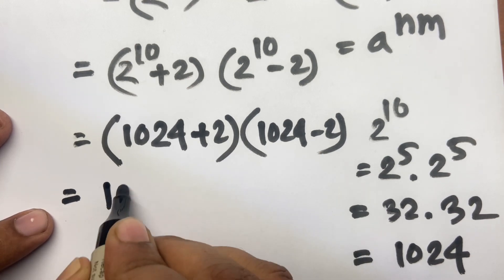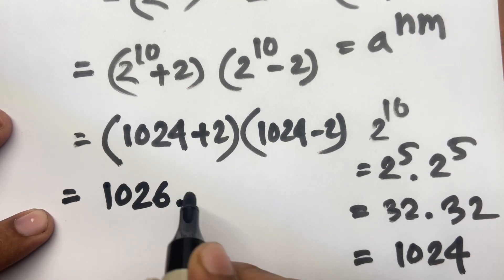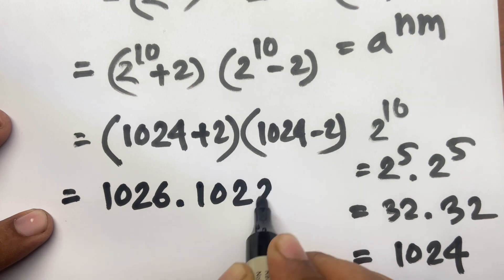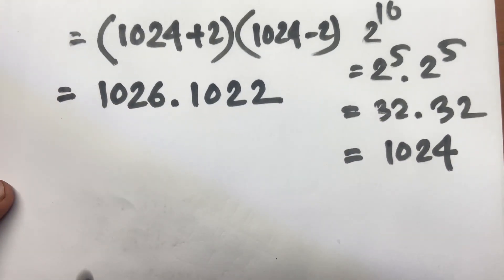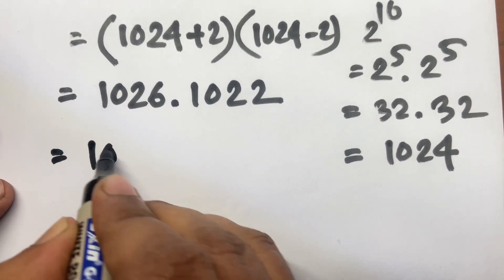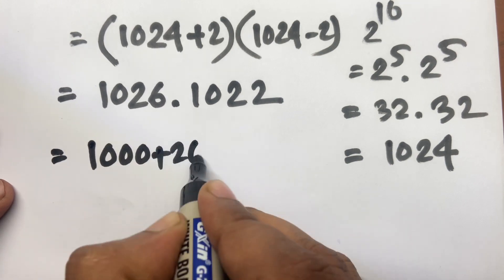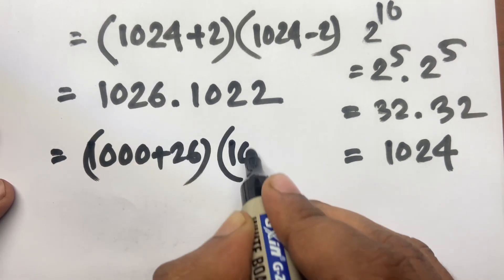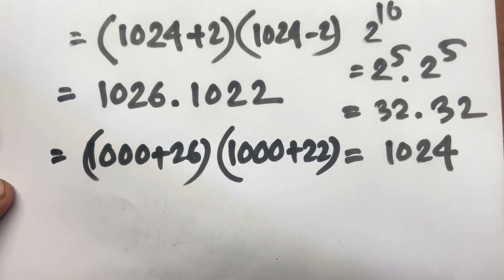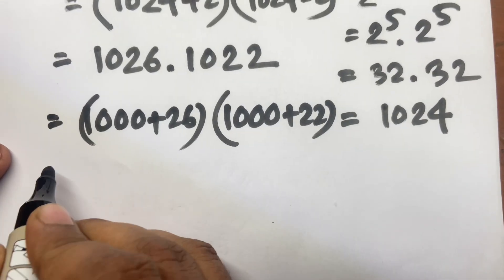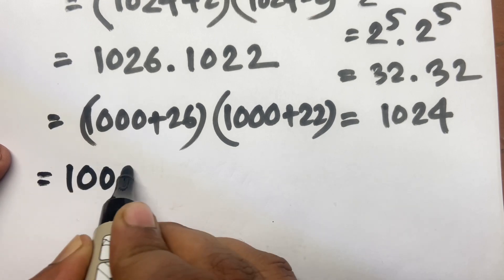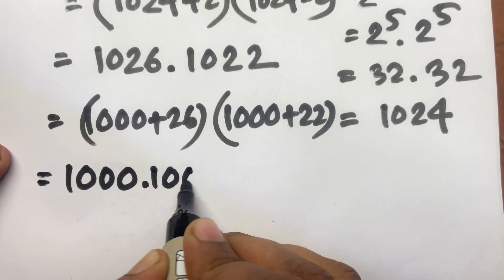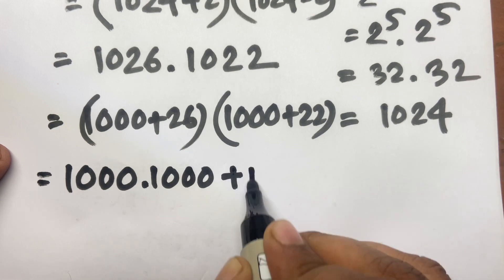And now 1000 plus 26 times 1000 plus 22. Now I multiply both. I can say easily 1000 times 1000 plus 1000...